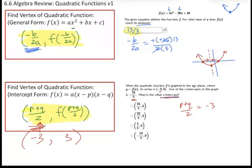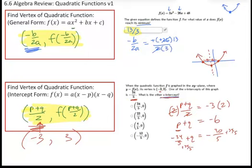Since we know one X intercept is negative 34 over 5, we substitute that in for either P or Q and solve for the remaining one. To avoid a fraction inside a fraction, multiply both sides by 2 first. We get P plus Q equals negative 6. Substituting: negative 34 fifths plus Q equals negative 30 fifths. Adding 34 fifths to both sides, we get Q equals 4 fifths. That is the other X intercept, so the coordinate is 4 fifths, 0.